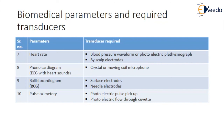Ballistocardiogram (BCG) is measured with the help of surface electrodes or needle-type electrodes. The very important parameter is pulse oximetry — that is the percentage of oxygen present in the blood, and doctors most commonly use this oxygen measurement. The transducer used is a photoelectric pulse pickup and photoelectric flow-through cuvette. Thank you.